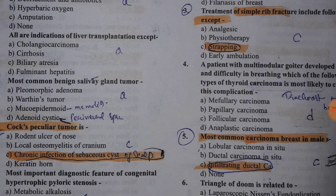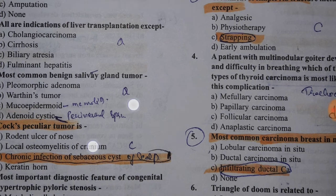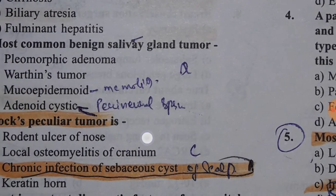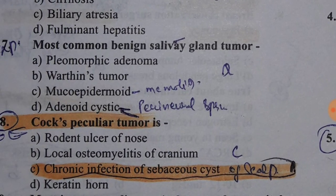Most common benign salivary gland tumor is basically pleomorphic adenoma. From the options you can see that mucoepidermoid carcinoma is the most common malignant tumor. Adenoid cystic carcinoma is basically the minor salivary gland malignant tumor.